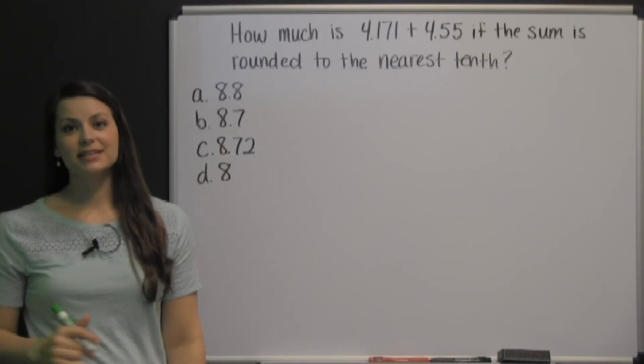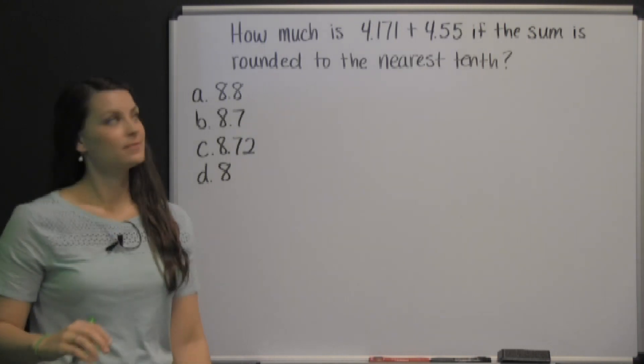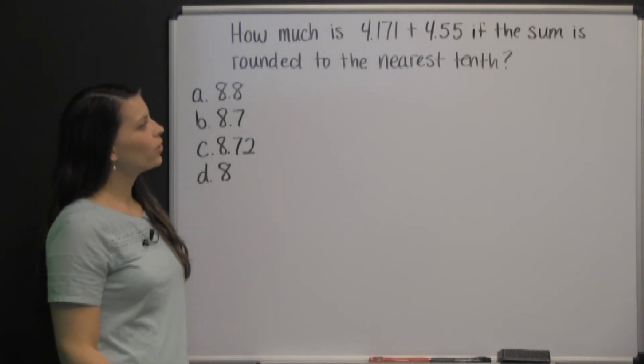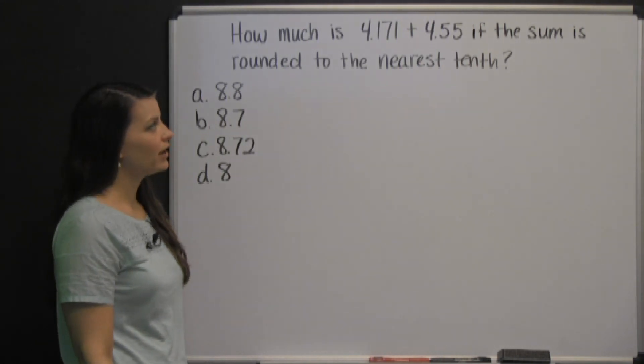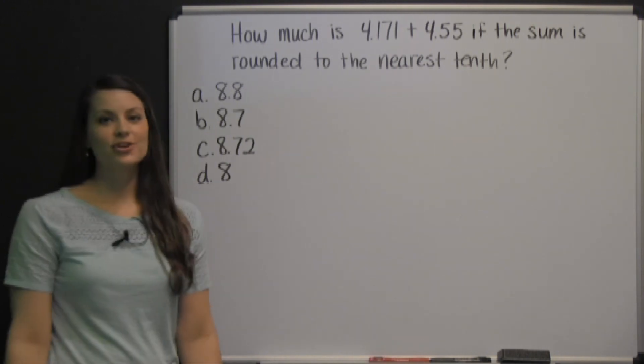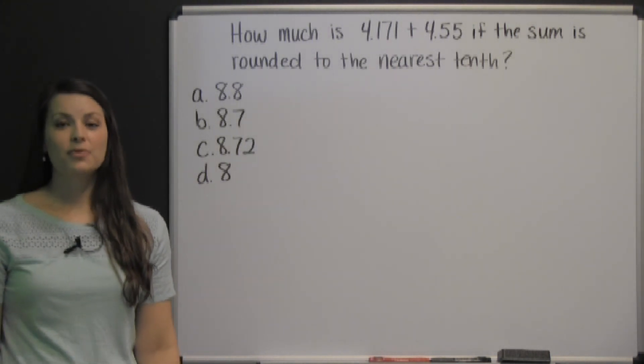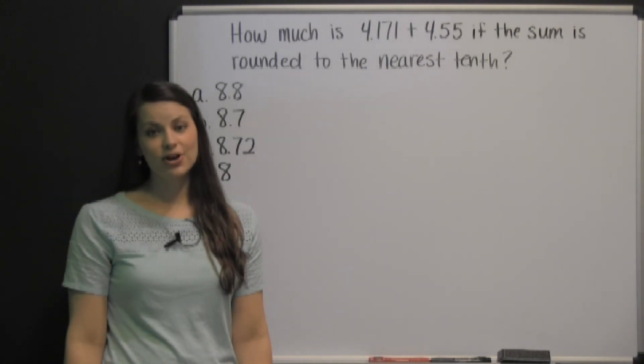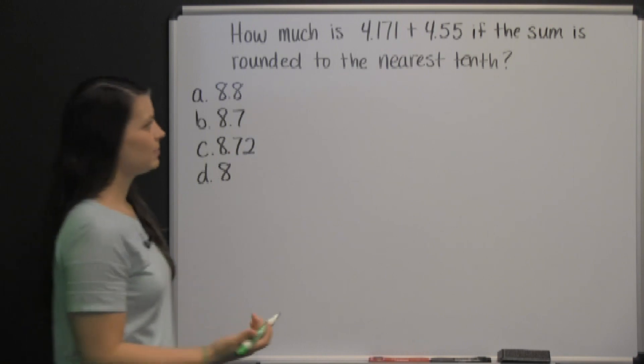This is a question from the mathematics section of the HSPT practice test. How much is 4.171 plus 4.55 if the sum is rounded to the nearest tenth? It's important to keep in mind that you are not allowed to use a calculator on the HSPT exam, so we need to work this just using pencil and paper.